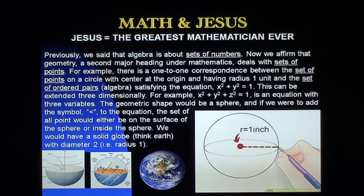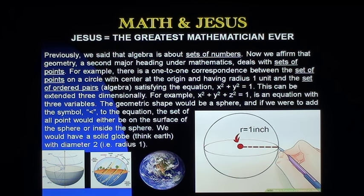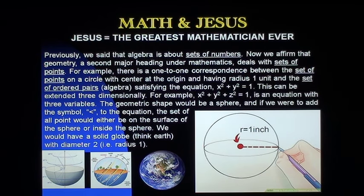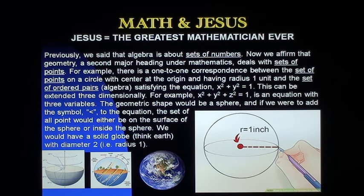Previously we said that algebra is about sets of numbers. Now we affirm geometry, a second major heading under mathematics. It deals with sets of points, not sets of numbers. For example, there is a one-to-one correspondence between the set of points on a circle with center at the origin and having radius one unit, and the set of ordered pairs satisfying the equation x squared plus y squared equals one — that is the equation for a particular circle.